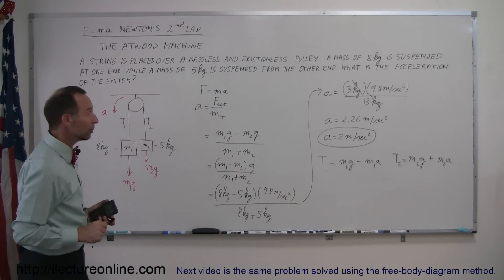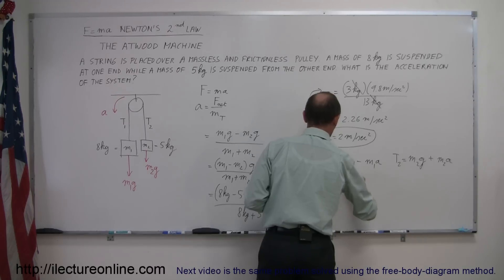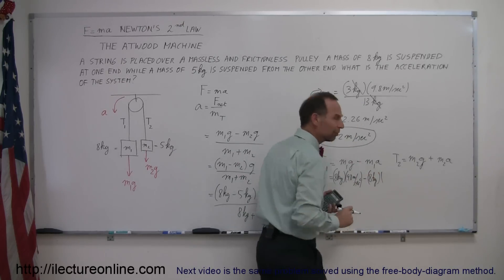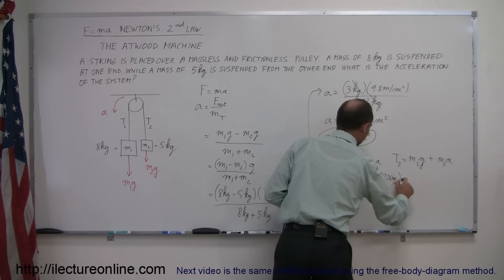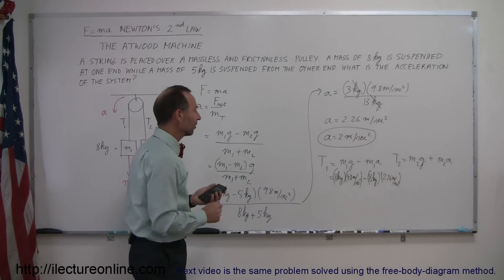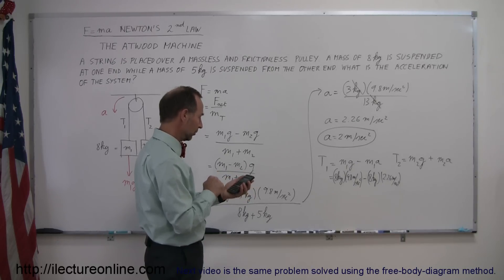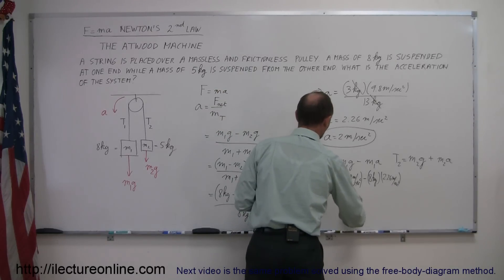Now we go ahead and we plug in the numbers. So this is equal to m1g, m1 is 8 kilograms, so this would be 8 kilograms times 9.8 meters per second squared, minus m1, which would be 8 kilograms times 2.26. And just so that I don't make a rounding error, I'll use a more accurate number, 2.26 meters per second squared. And if I now grab my calculator, so it's 9.8 minus 2.26 times 8, and we get 60.32. So this is equal to 60.32.